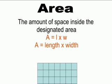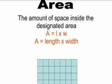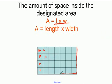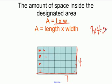To find the area is the amount of space inside. To do that, it's length times width. This shape has a length of seven and a width of four. So to find the area, we do seven times four, which is twenty-eight. This is twenty-eight units inside.